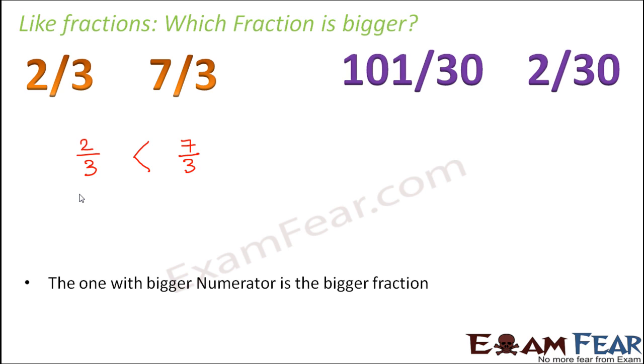So the simple rule you need to remember is that the one with the bigger numerator is the bigger fraction, provided we are dealing with like fractions. That is provided the denominators are already same. So we just need to match the numerators.